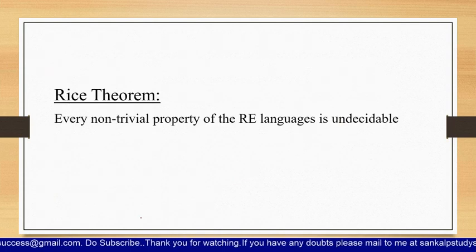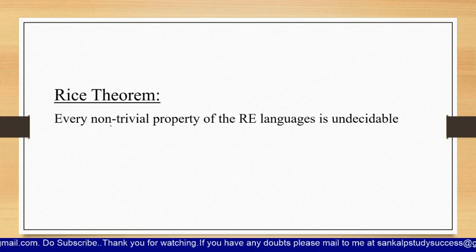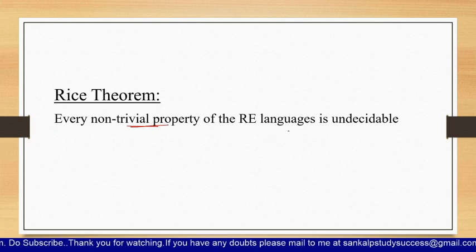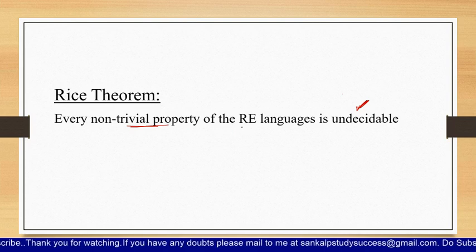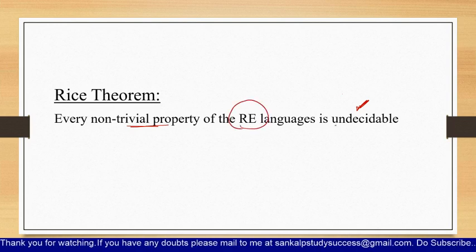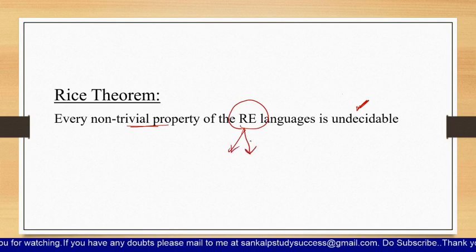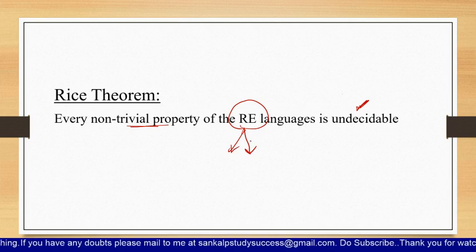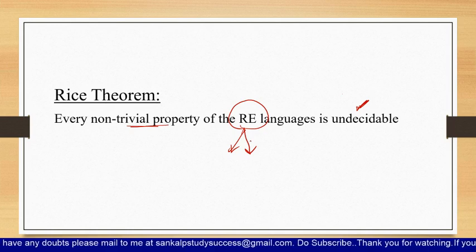Now coming to Rice's Theorem, which is a very simple theorem: every non-trivial property of a recursively enumerable language is undecidable. This means any non-trivial property of a recursively enumerable language is undecidable. Since recursively enumerable languages include both decidable and undecidable ones, for every non-trivial property of a recursively enumerable language, it is undecidable.